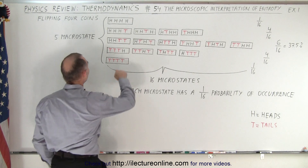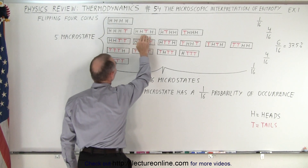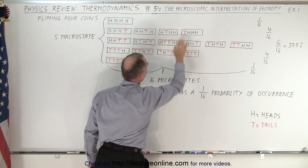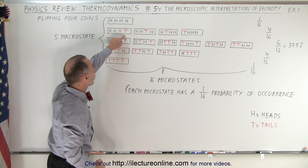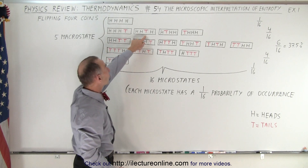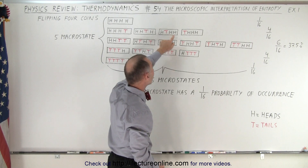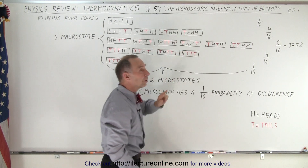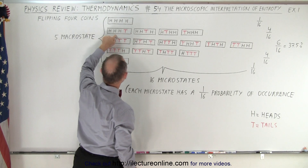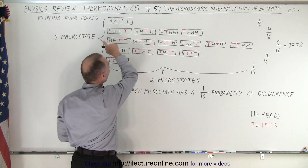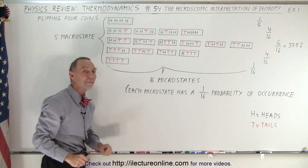Notice that if we have three heads and one tail, they could be in this arrangement, this arrangement, this arrangement, or this arrangement. In other words, the fourth coin ended up being tails, or the third coin ended up being tails, or the second coin ended up being tails, or the first coin ended up being tails. So for the macro state of three heads and one tail, we have four combinations that could exist — those are called micro states.